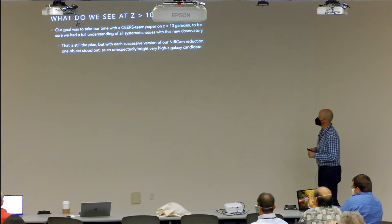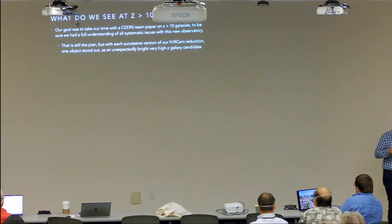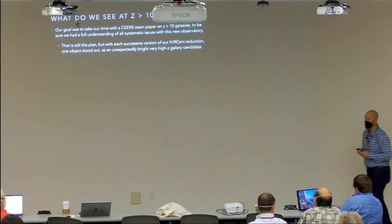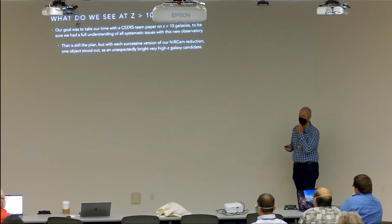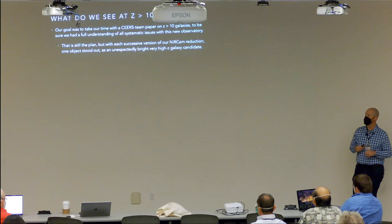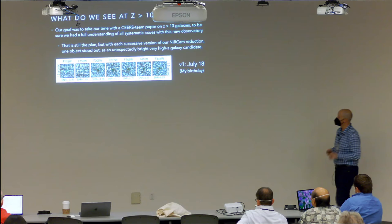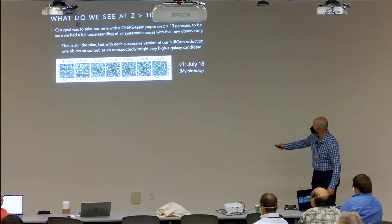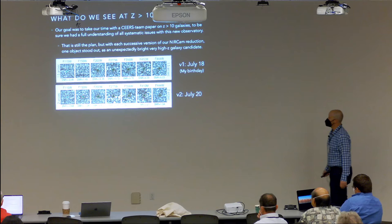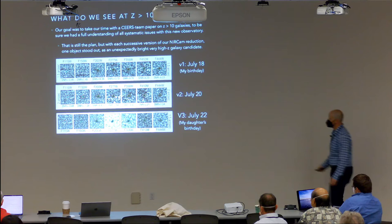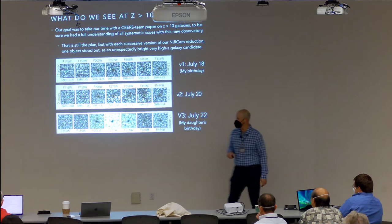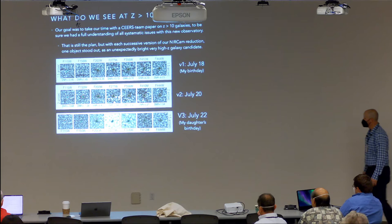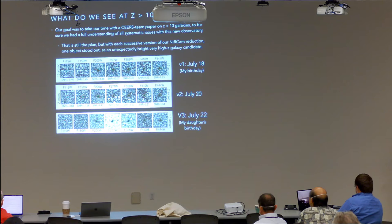Our goal within CEERS was not to rush out results, but to fully understand the new data. However, one object kept appearing in every successive version of our NIRCam reduction. The first time we saw it was July 18th — my birthday — looking like a dropout in the two bluest bands. A couple days later our improved reduction showed it more clearly. By my daughter's birthday it looked even better: no flux in the blue bands and a fairly bright obvious source in the red.